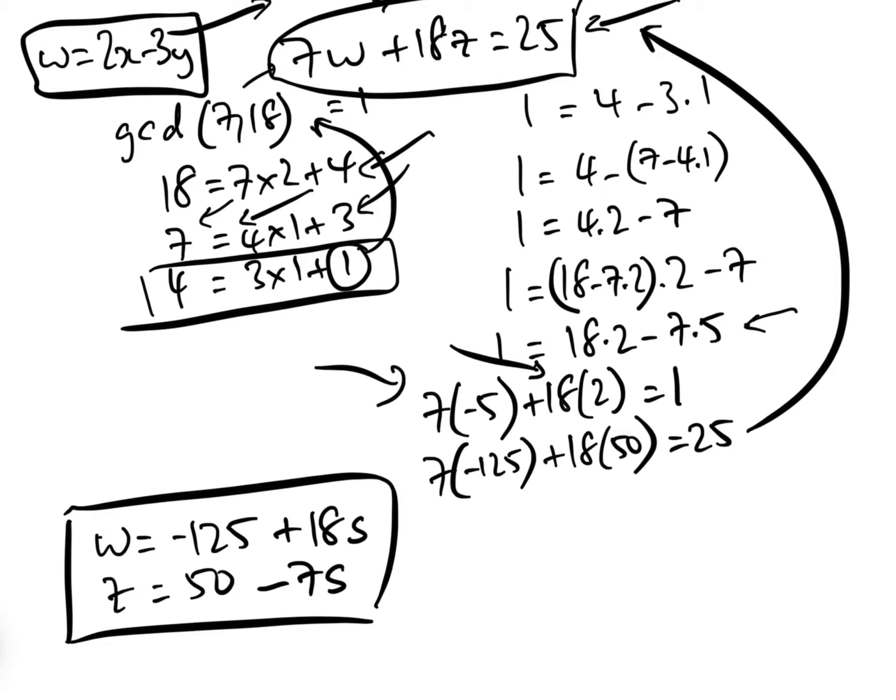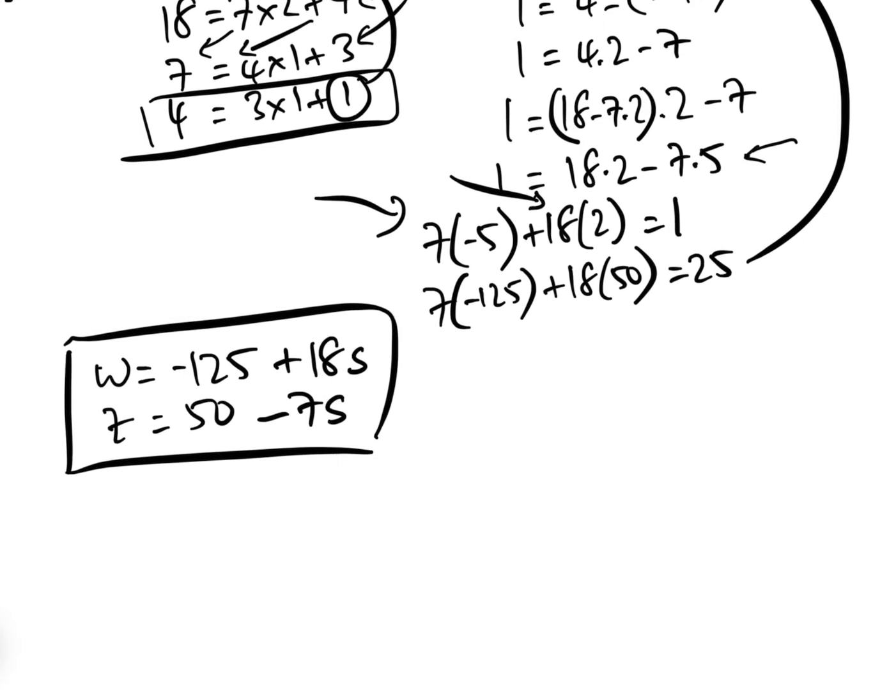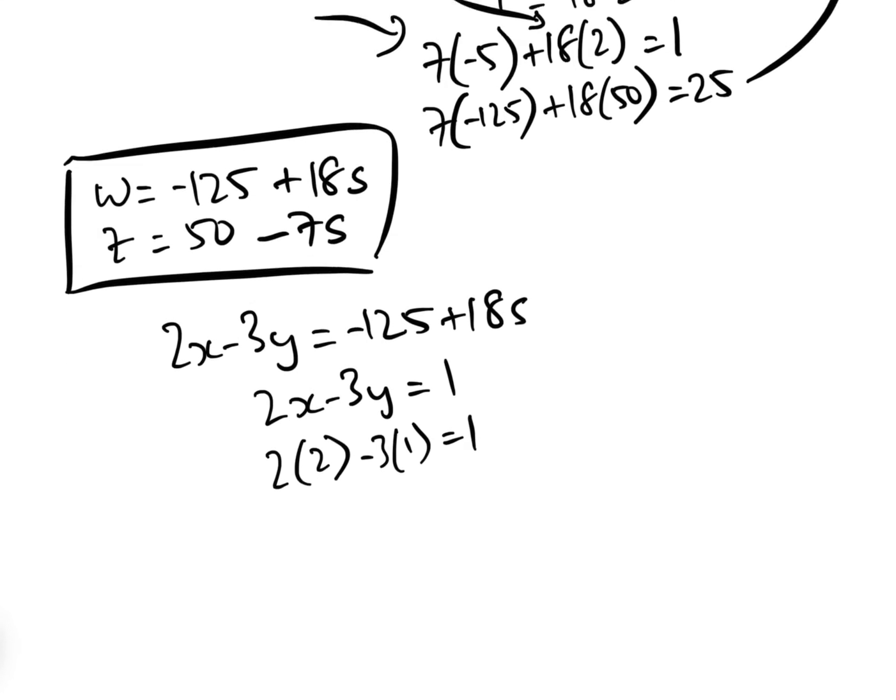Now what we need to do is solve for w. Remember up here we have w is 2x minus 3y. So we have 2x minus 3y equals w, which equals minus 125 plus 18S. First of all, let's solve 2x minus 3y equals 1. By inspection, we can see that that would be 2 times 2 minus 3 times 1 equals 1.